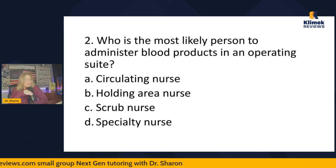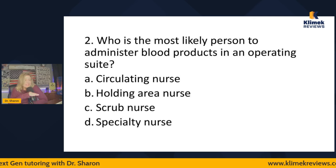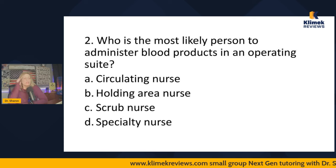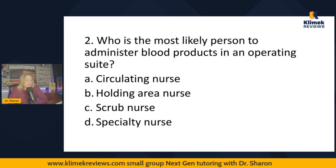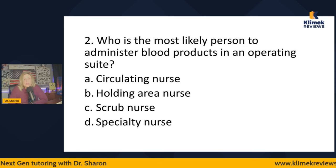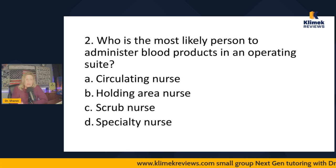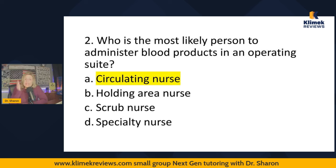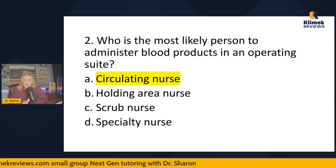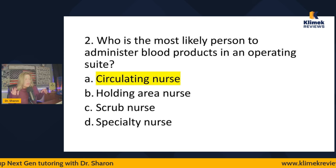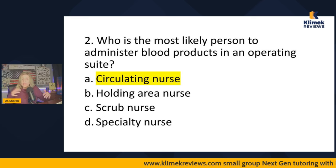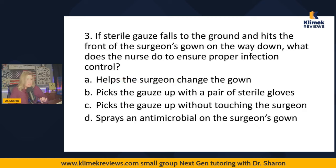The holding area nurse is out because we're in the OR, not the holding area. So it's between the circulating nurse and the specialty nurse. The specialty nurse — you'd have to tell me what their specialty is. The one that is not sterile in the OR is the circulating nurse. We need someone who's in the OR but not sterile, and that's the circulating nurse — the person in scrubs and a mask who runs around getting what's needed.